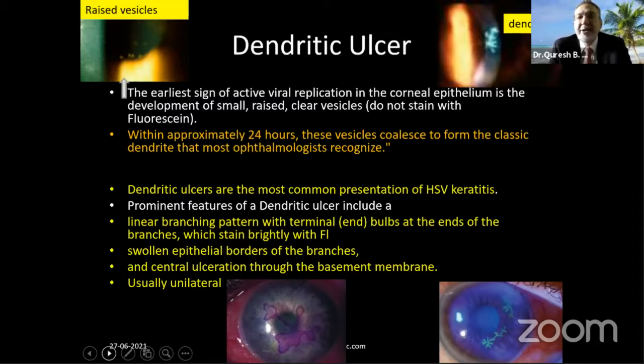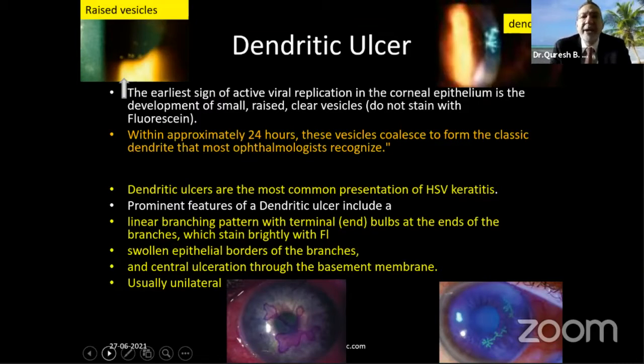In epithelial keratitis you will either get a dendritic pattern or a geographic ulcer — these are the most common presentations. Dendritic ulcers can also lead to geographic ulcers.